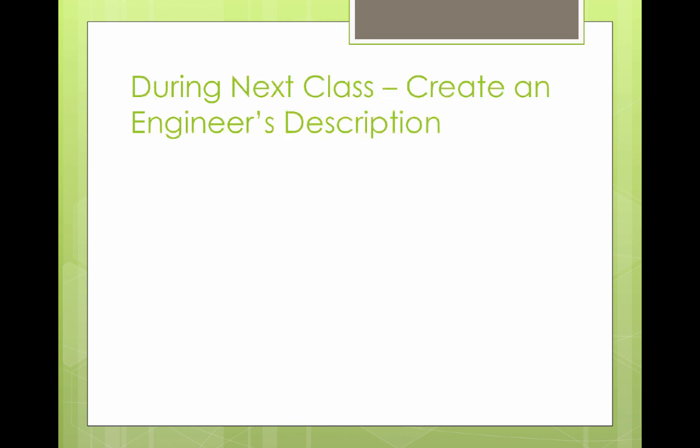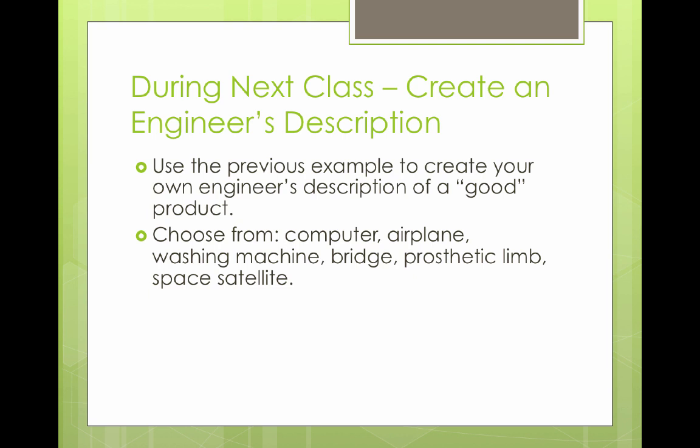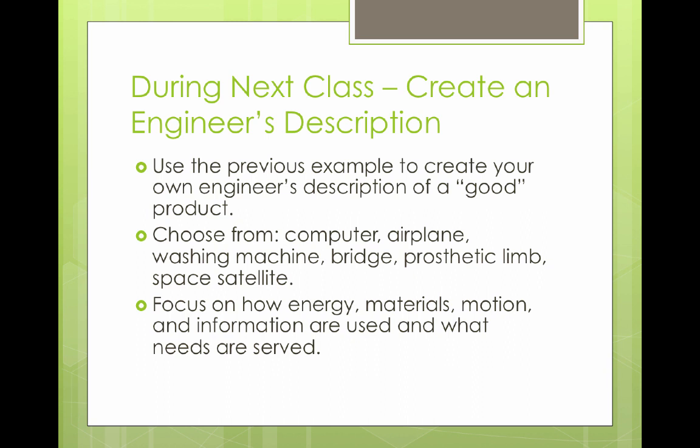During next class, you will use the previous example in this video to create your own description of a good product. Use the specifics that an engineer would use. You may choose from the following: a computer, an airplane, a washing machine, a bridge, a prosthetic limb, or a space satellite. You will focus on how energy, materials, motion, and information are used, and what needs are being met. Remember, you will need to be as specific as possible. This is something we will do in class when you come next time.